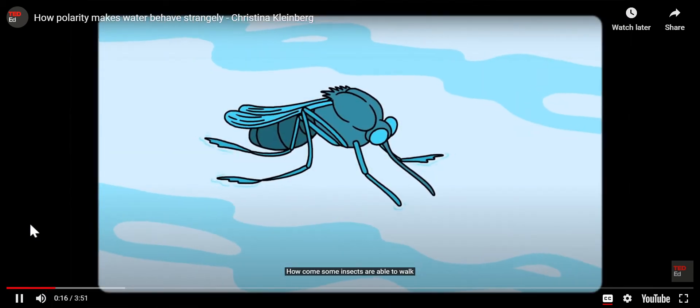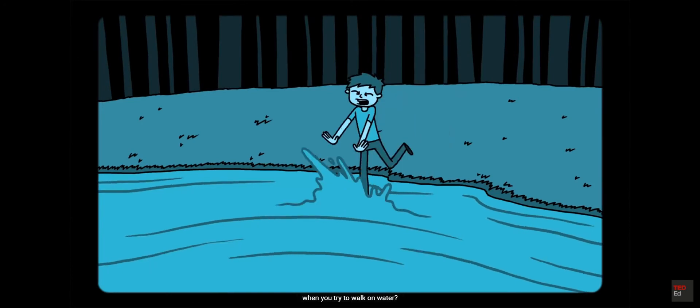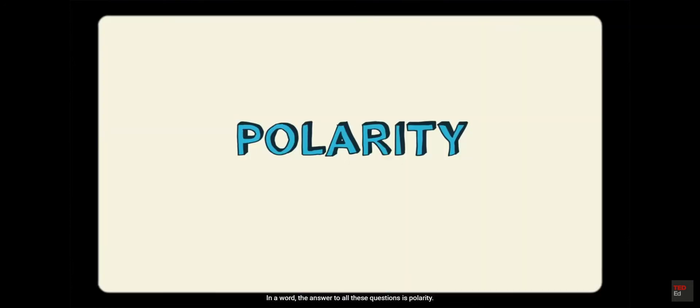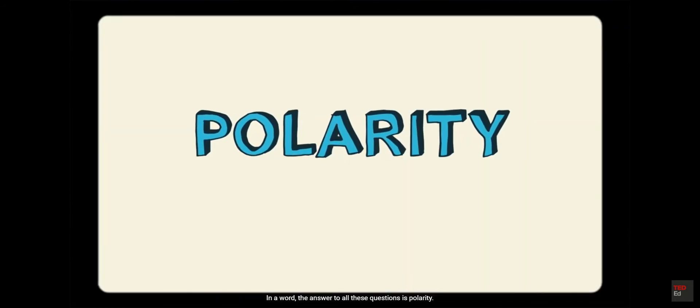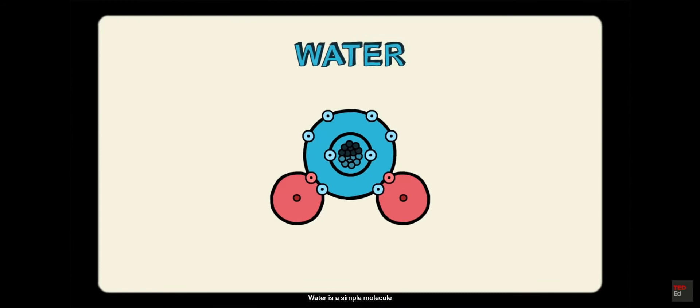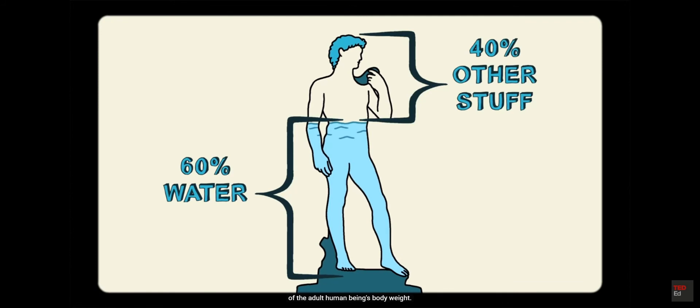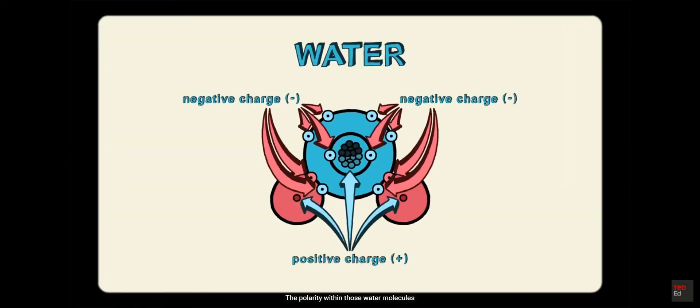How come some insects are able to walk on the surface of a pond, but you quickly sink to the bottom when you try to walk on water? And why do lakes freeze from the top down in winter? In a word, the answer to all of these questions is polarity. Water is a simple molecule made up of one oxygen atom and two hydrogen atoms, but it is essential to life. In fact, water makes up approximately 60% of the adult human being's body weight. The polarity within those water molecules gives this common substance the properties that make it unique and life-sustaining.